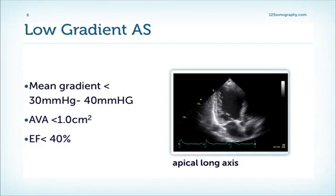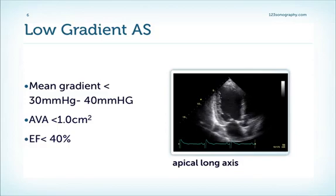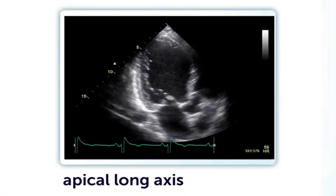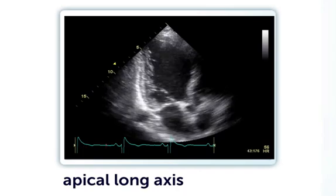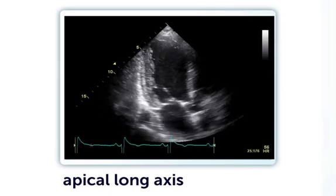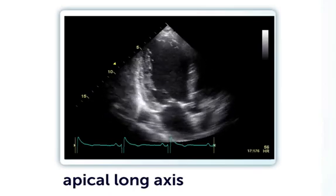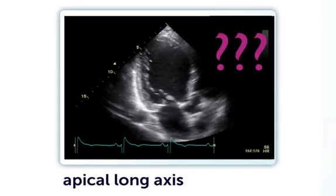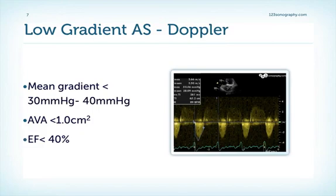Low flow, low gradient aortic stenosis is also defined as having a calculated valve area below one square centimeter and an ejection fraction below 40%. Here on the right, you can see in the apical long axis a highly reduced left ventricular function with a severely hypokinetic or even akinetic apical area. Perhaps this patient has ischemic heart disease leading to low output, and we can see the heavily calcified aortic valve. So does this patient have low flow, low gradient aortic stenosis? When we perform the Doppler, we find lower mean gradients than we might expect.